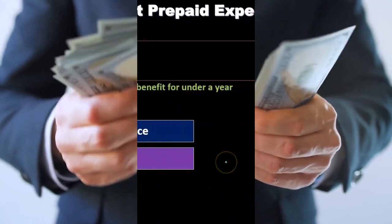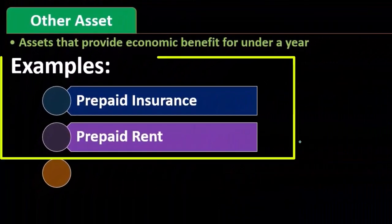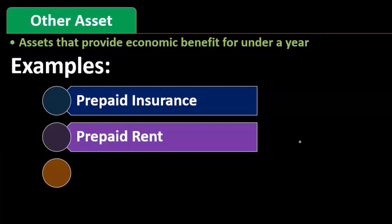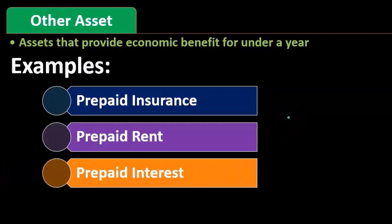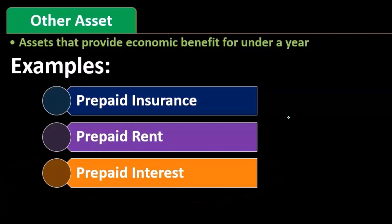We could also prepay things like rent. Rent is another item where prepaying would be a smart thing to do in certain circumstances. If that were the case, we would treat the prepayment and the audit of it in a similar fashion as we would for prepaid insurance. We could have prepaid interest as well, and similarly anything where we decide we're going to pay before we get the goods or services.